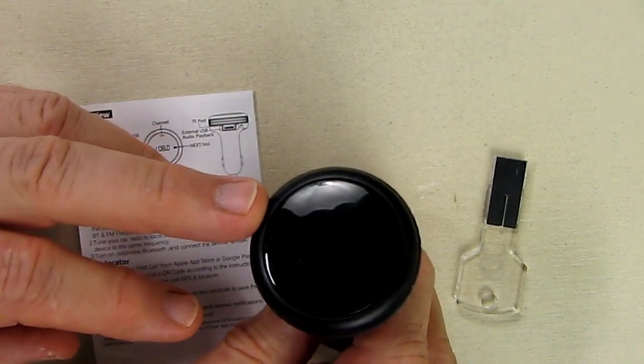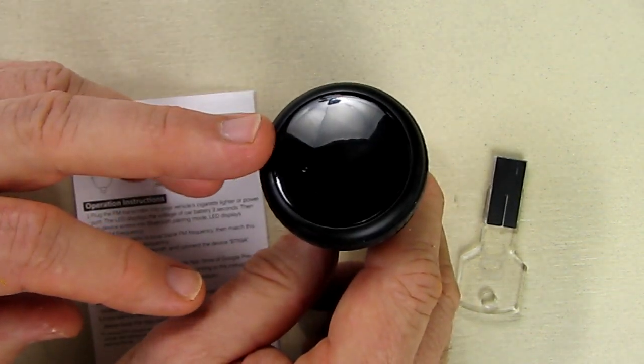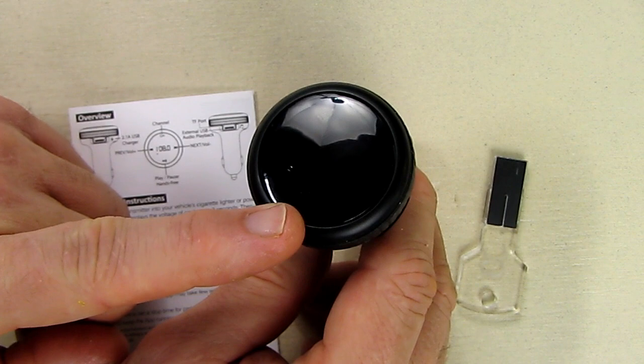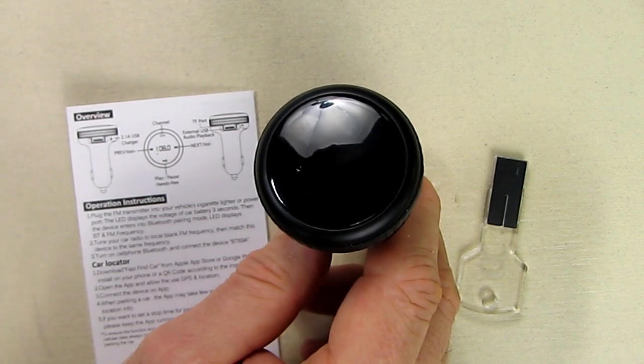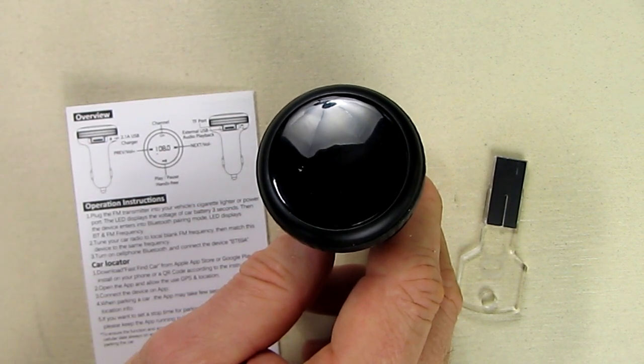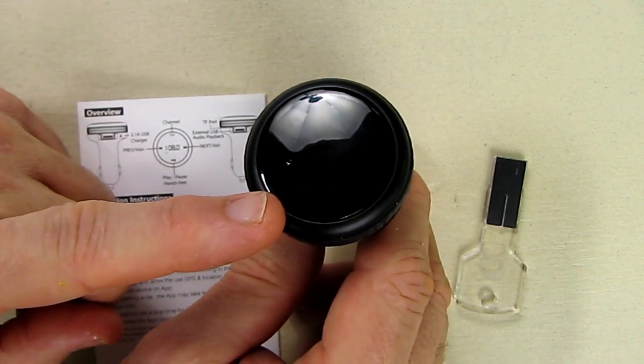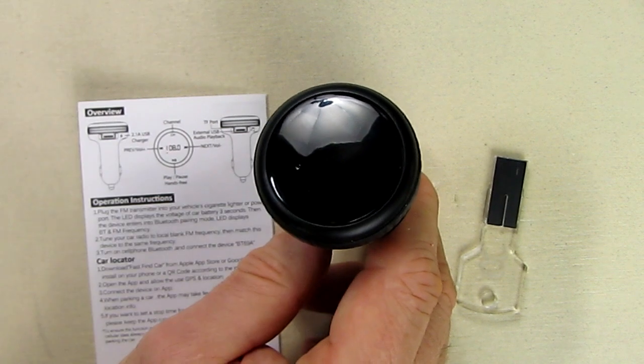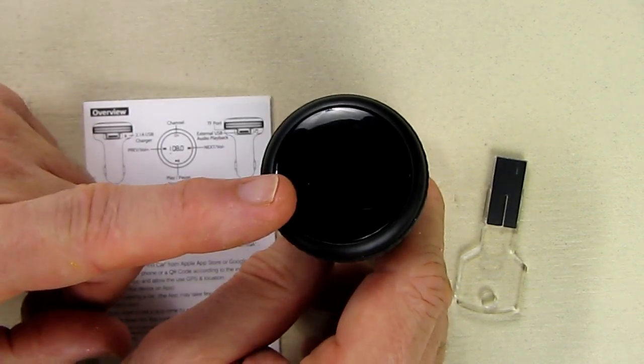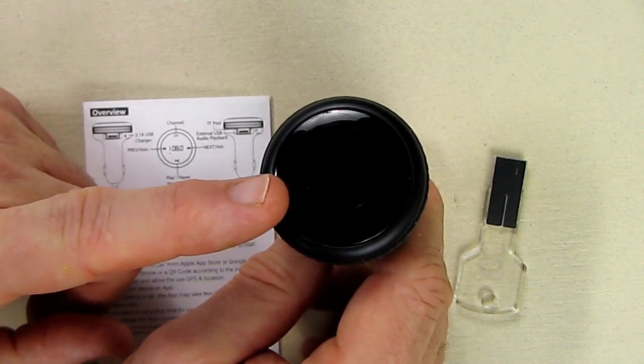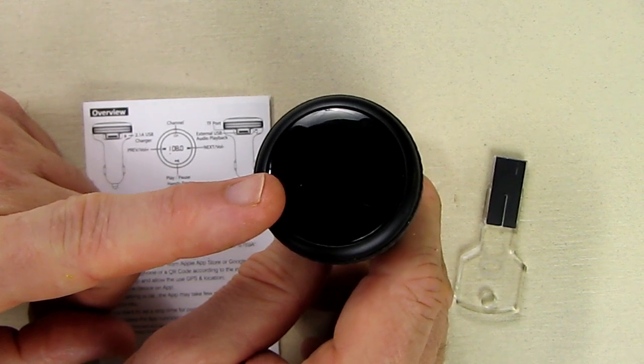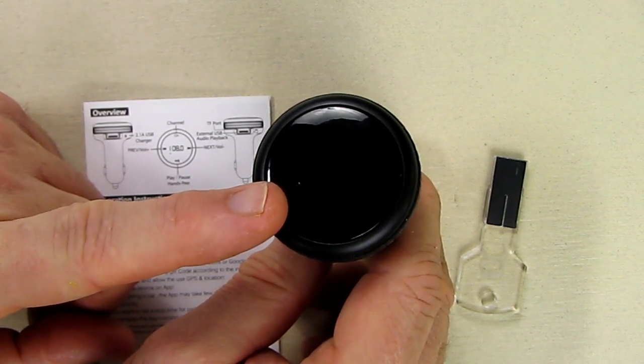Now if you have an incoming call and you're playing music, you should be able to hit one of these buttons, the play pause button, and it should allow you to pick up that call. Also, if you double click that, it will redial that last number. There's also a voltage display on here that will show you the voltage of your car battery, the 13.8 volts, which will let you know that your alternator is working.